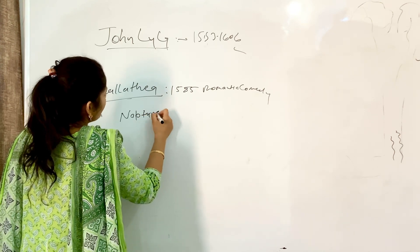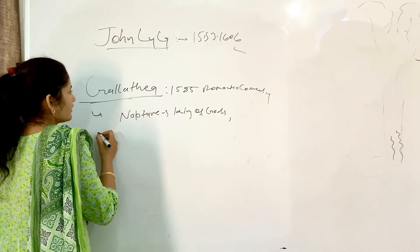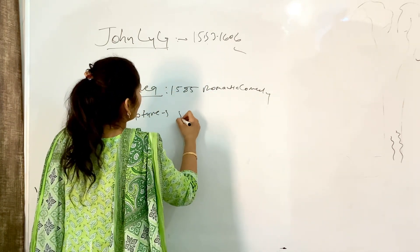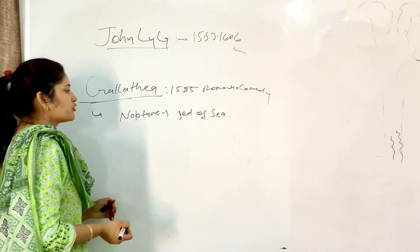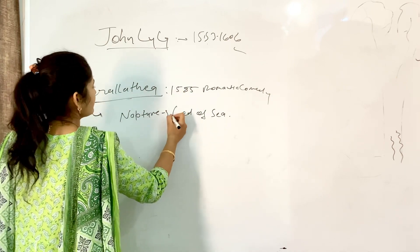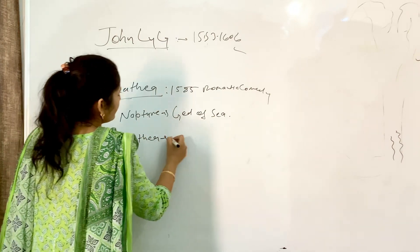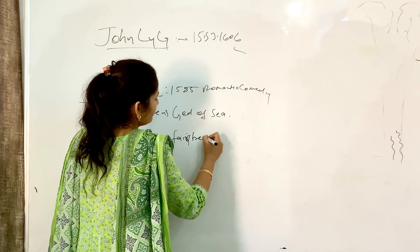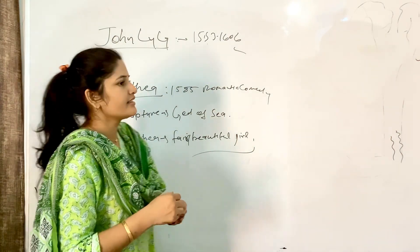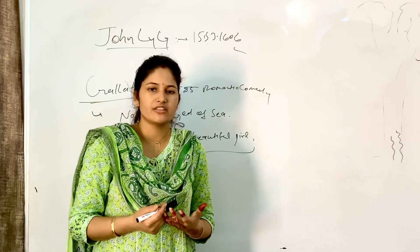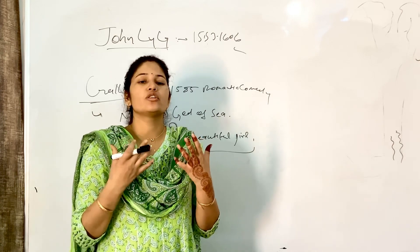God Neptune is the god of the sea. Galathea is a fair, beautiful girl. The story is that Galathea has become a young, fair, beautiful girl of the village. Every year, her villagers have to sacrifice one fair maiden to the god of the sea, Neptune, otherwise he becomes angry.